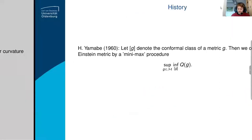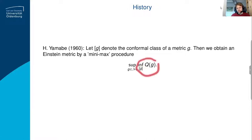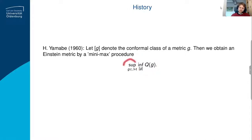So you consider this action, and Yamabe had the idea of, instead of trying to vary the Hilbert action, you do a minimax procedure. You consider the action Q — sort of the average scalar curvature — and for a given metric, you first look for the infimum inside the conformal class. So you don't vary the metric arbitrarily; you just look at conformal rescalings, which means you take the metric and multiply it by a positive function. The problem then becomes a scalar problem, and you get some infimum.